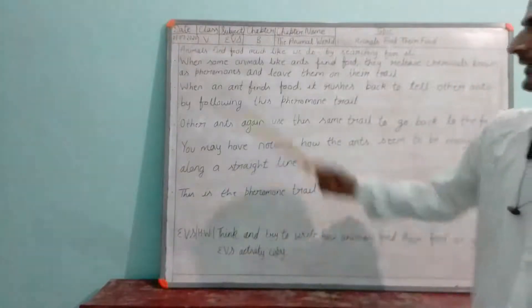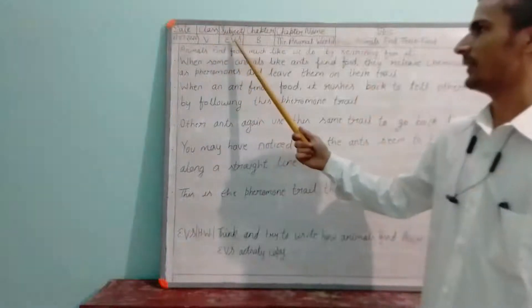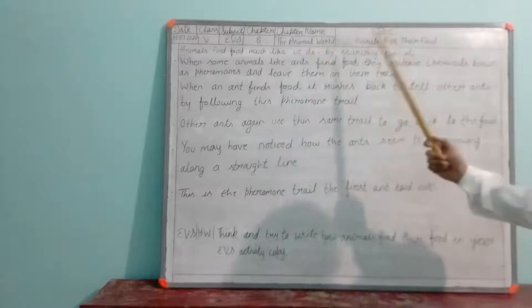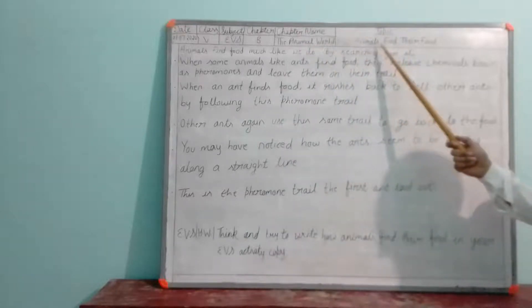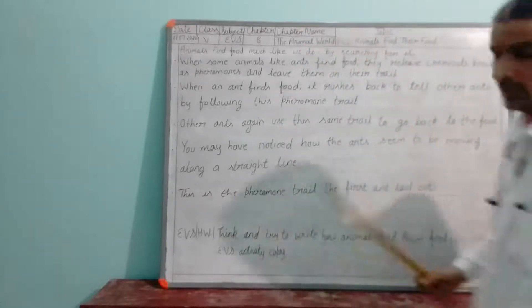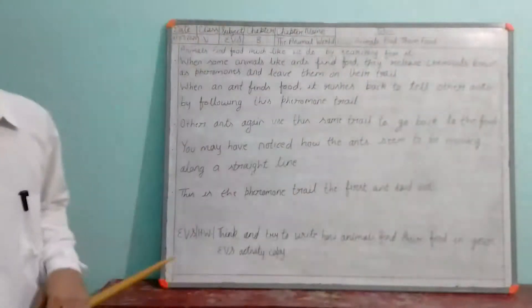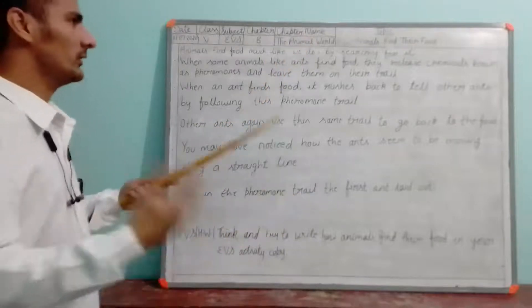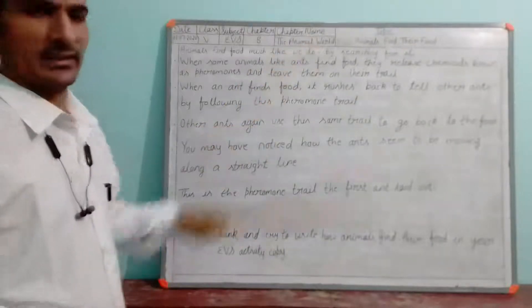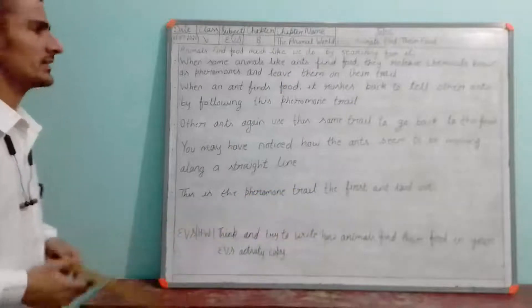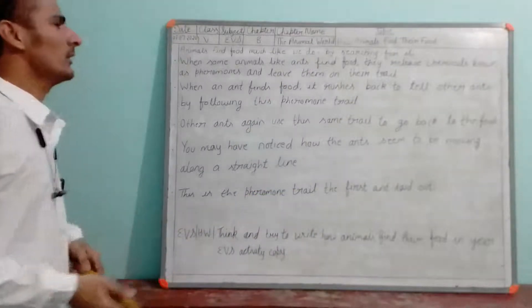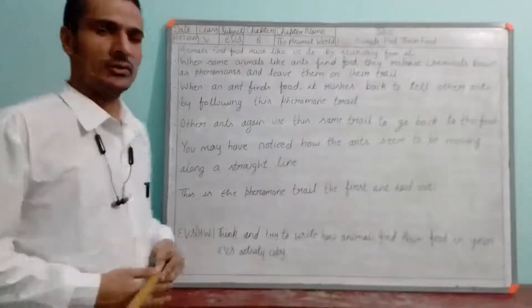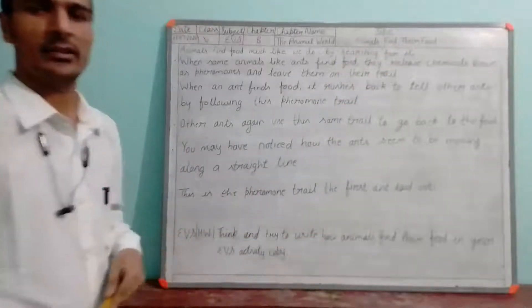Hello students, I am back. Class 5, subject areas, chapter 8. Chapter name: The Animal World. Today's topic is how animals find their food. We are going to talk about animals and their habits, their life, and more. Today we will talk about how animals can find their food.